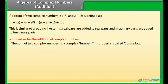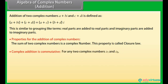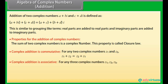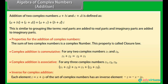Properties for the addition of complex numbers: The sum of two complex numbers is a complex number — this property is called the closure law. Complex addition is commutative: for any two complex numbers Z1 and Z2, Z1 plus Z2 equals Z2 plus Z1. Complex addition is associative: for any three complex numbers Z1, Z2, Z3, Z1 plus (Z2 plus Z3) equals (Z1 plus Z2) plus Z3.